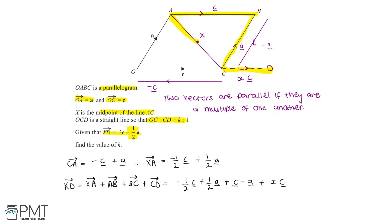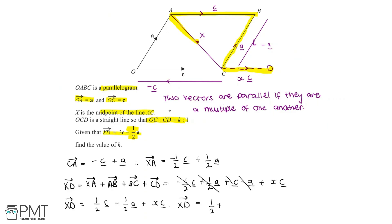Now let's simplify. XD equals: minus half c plus c gives half c; half a minus a gives minus half a; and we still have the Xc term. So we can write XD equals the quantity of half plus X times c, minus half a.